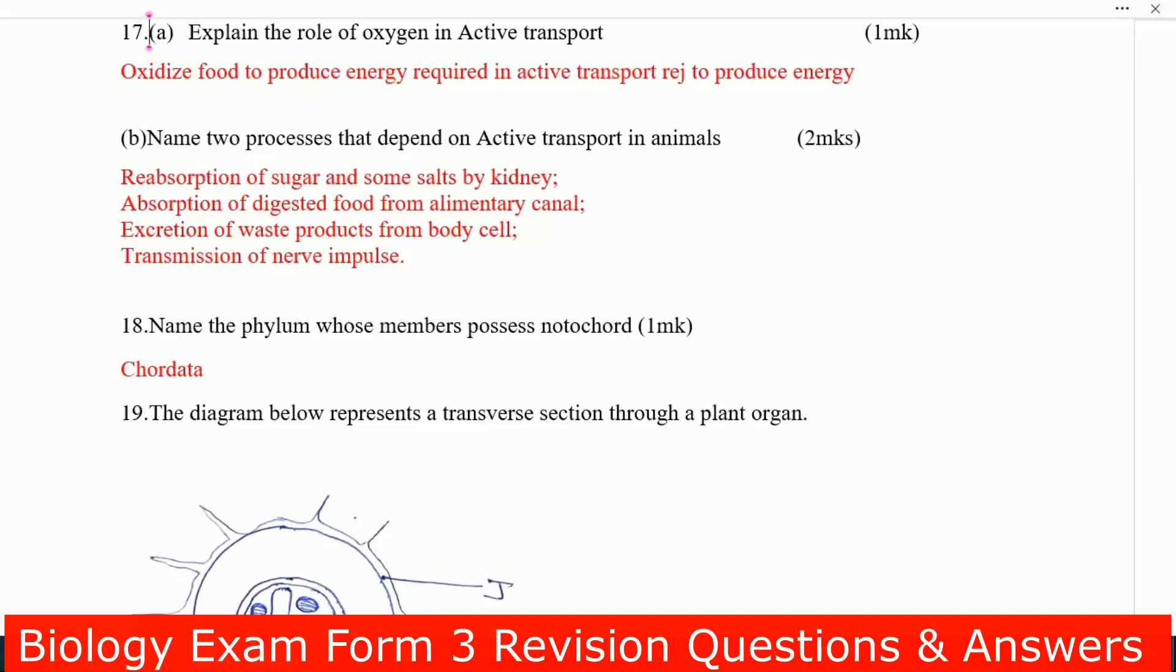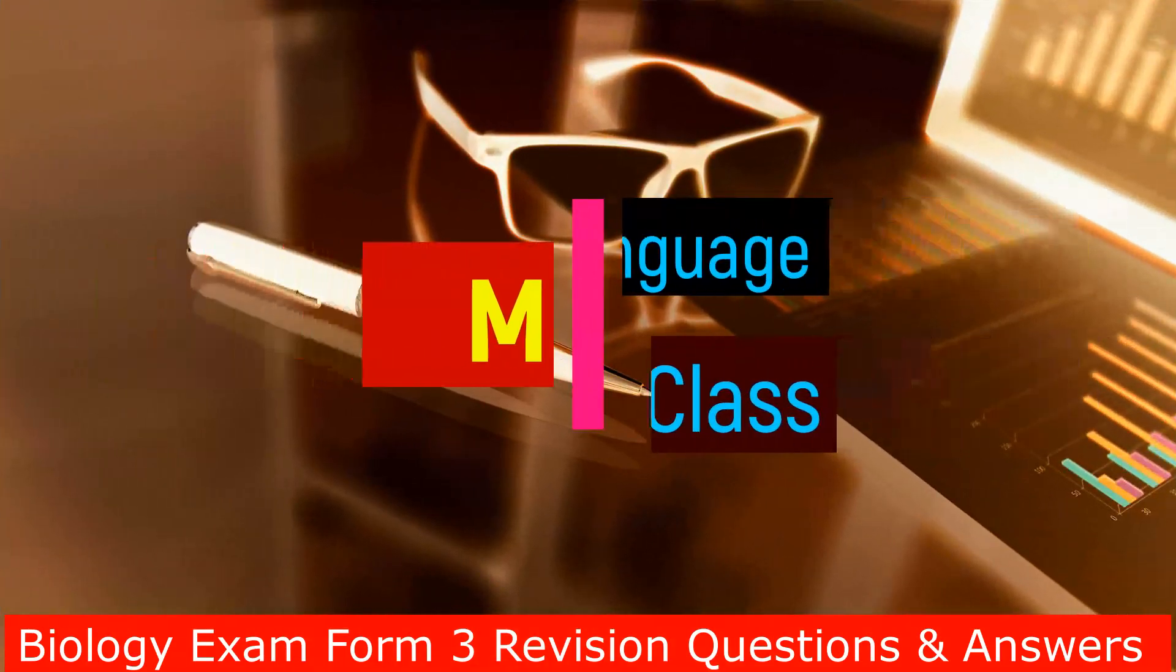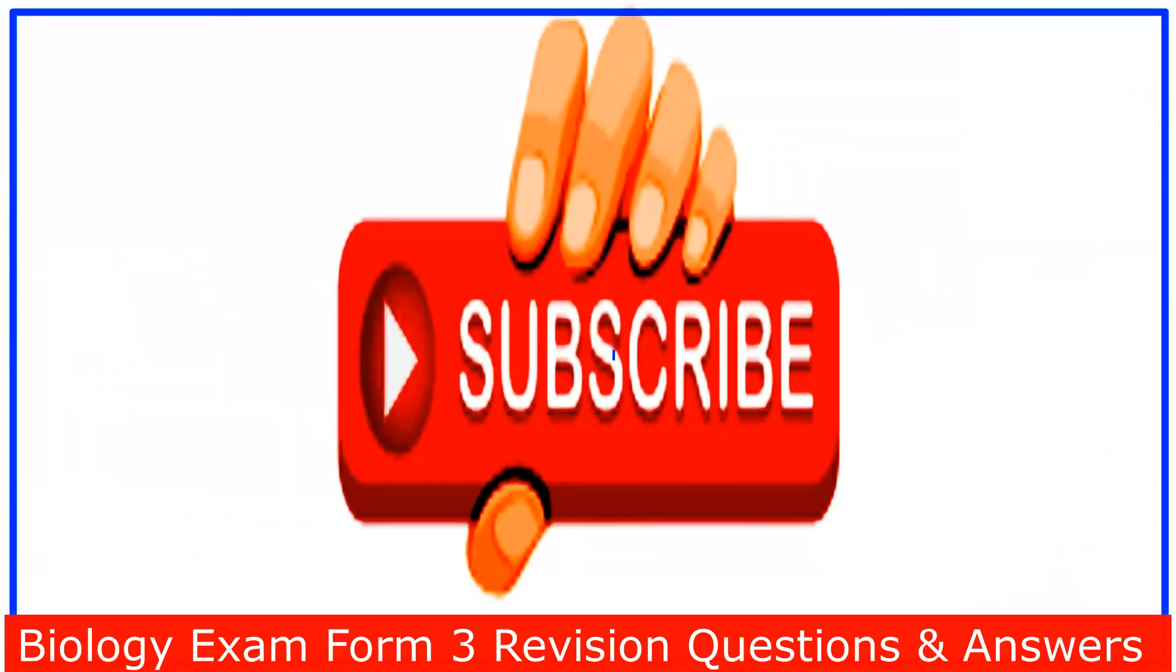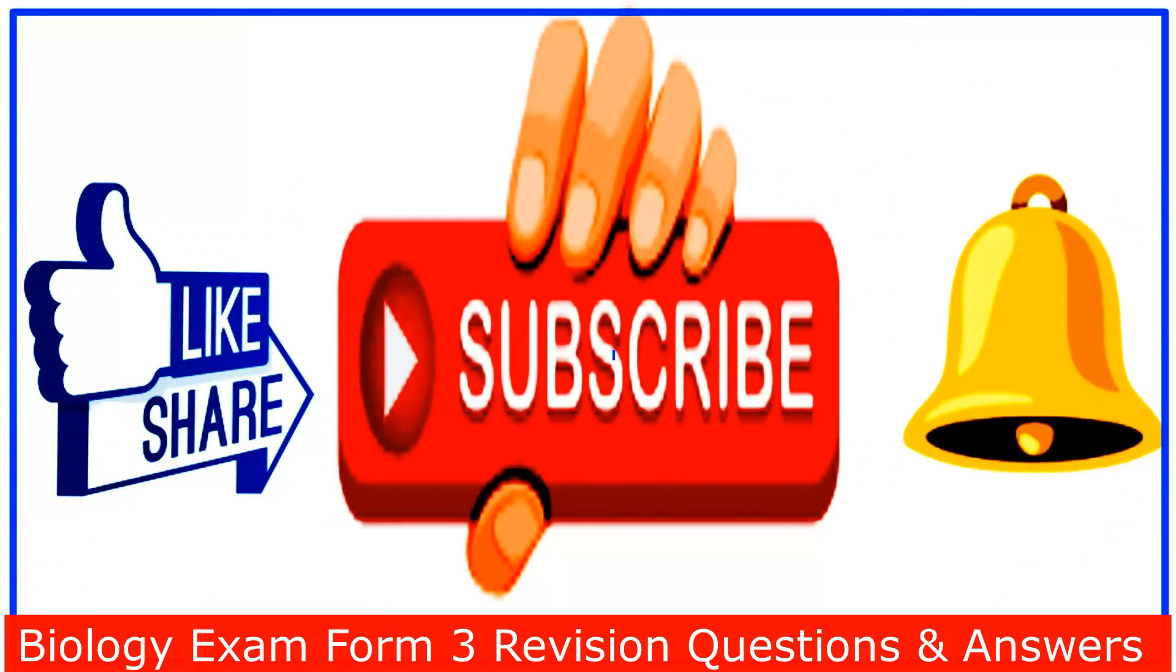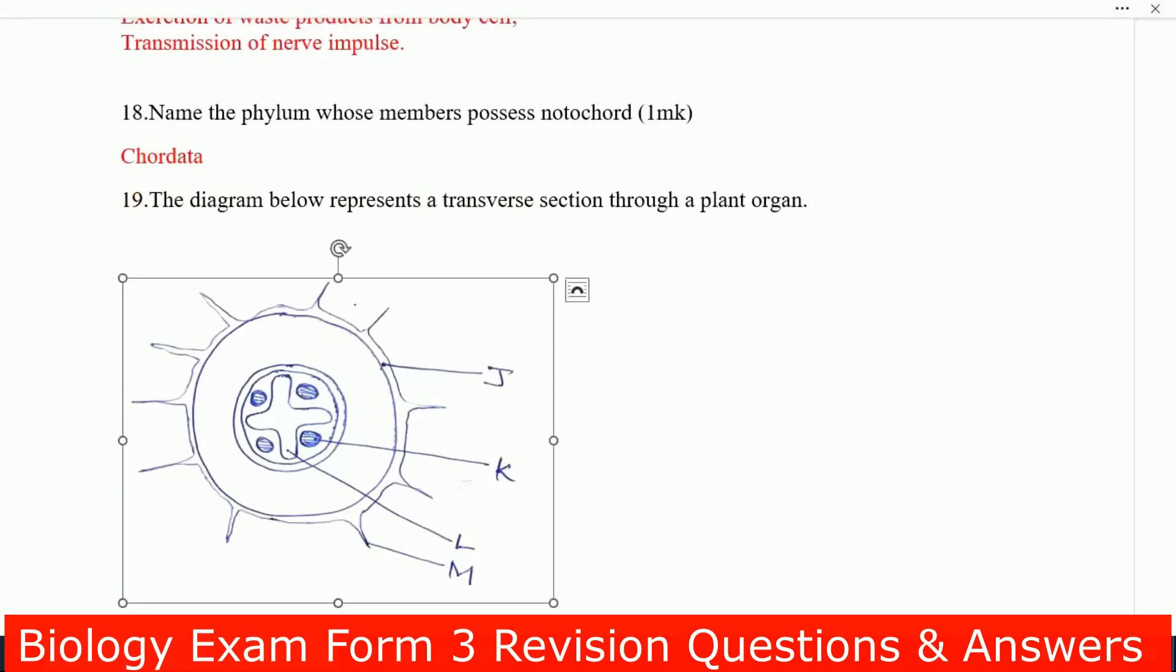The role of active transport in animals: absorption of sugar and some salts in kidney, absorption of digested food from alimentary canal, excretion of waste products from body cells, then transmission of nerve impulse.